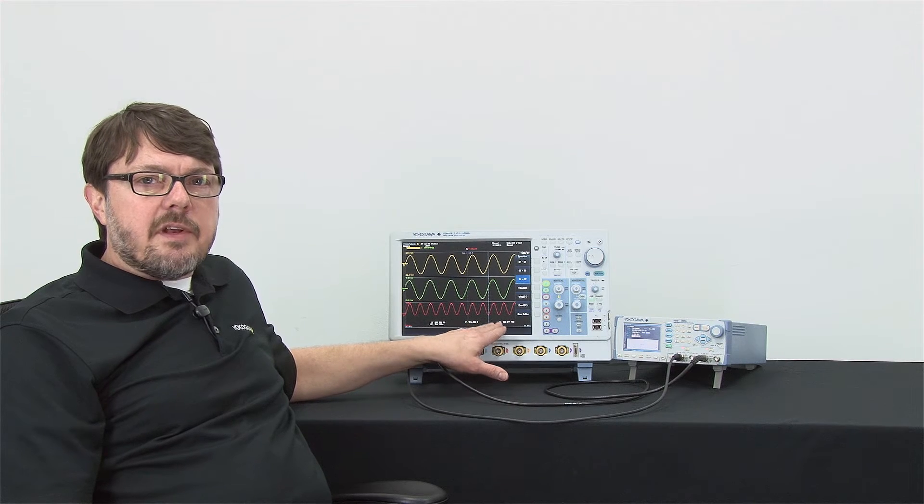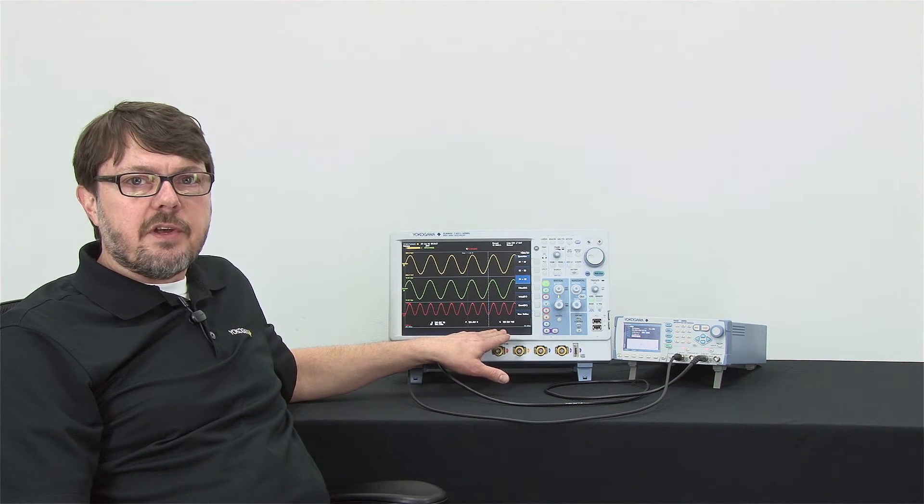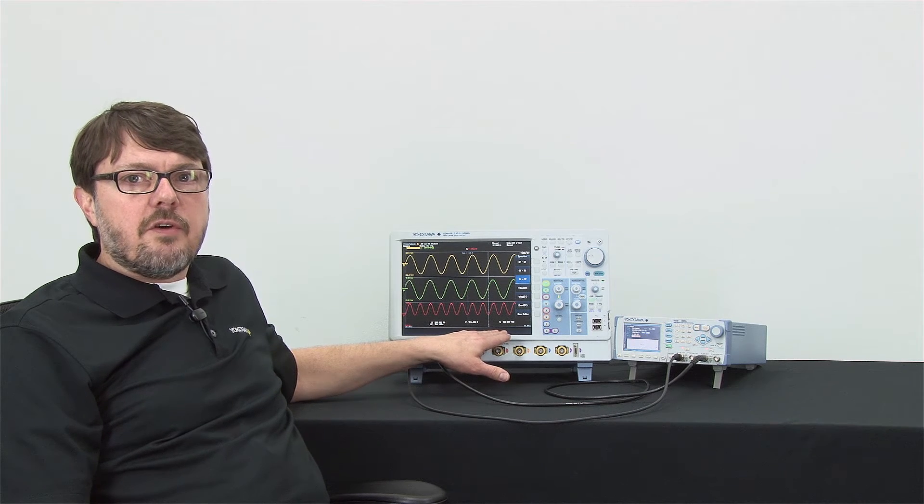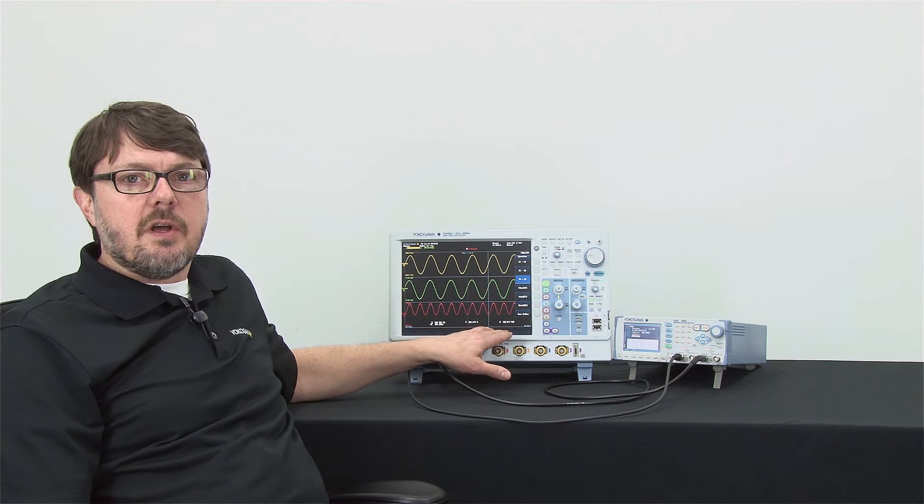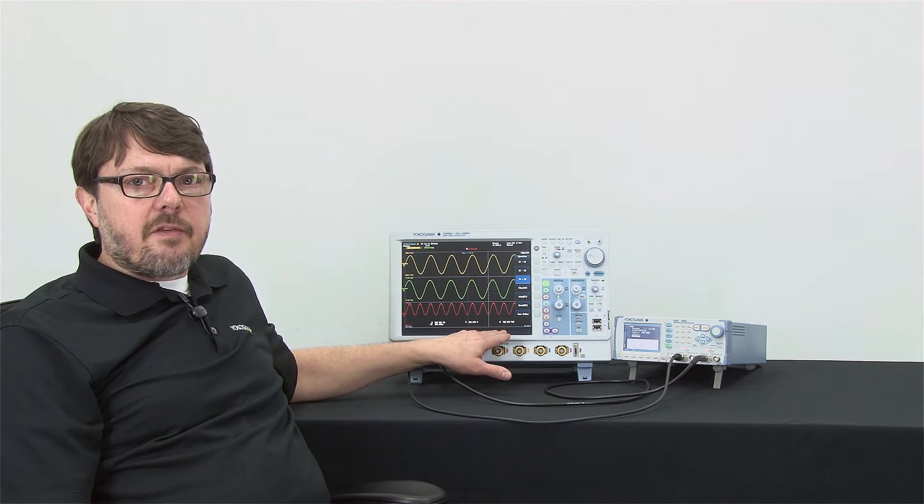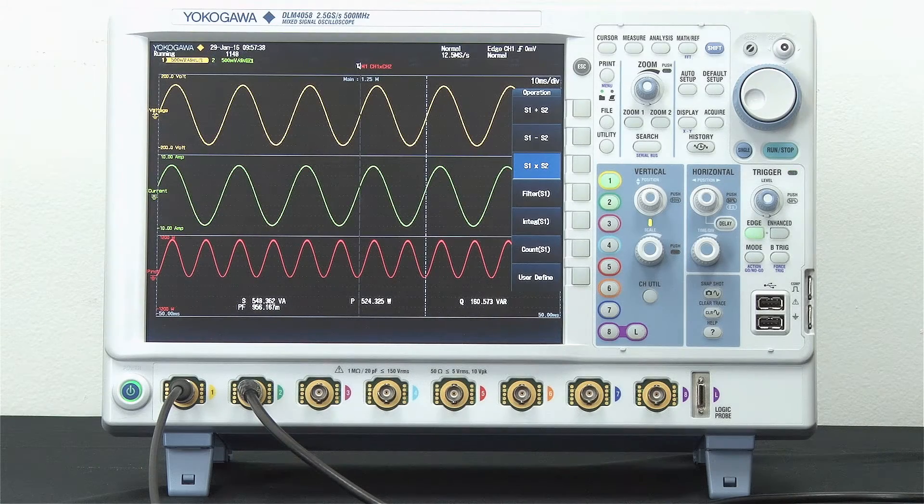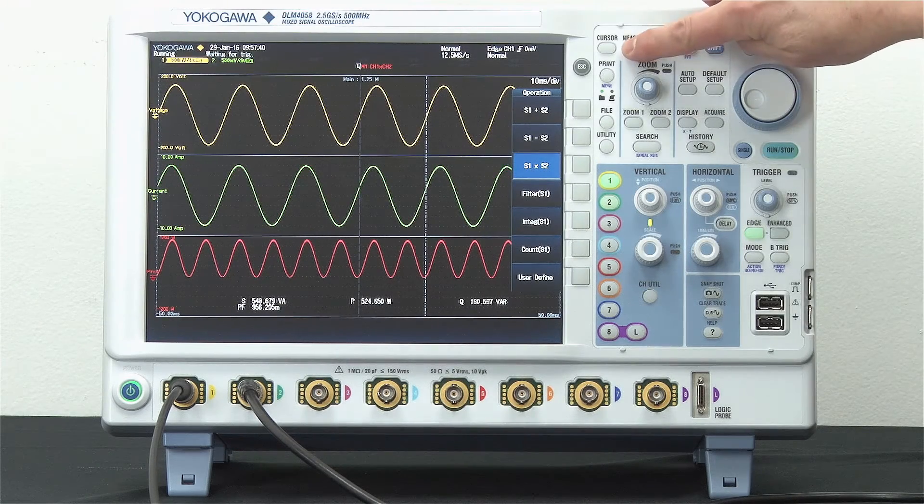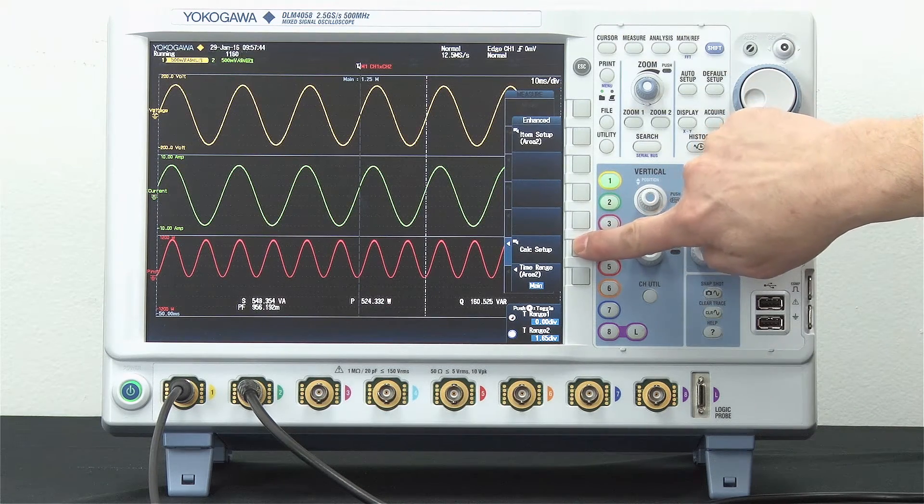Okay, now that I have an instantaneous power waveform, I want to do some calculations on it and get some numerical results for each of the four power calculation parameters which I mentioned earlier. I will use the onboard calculator for that. Again, the onboard calculator is a standard feature. To get to the onboard calculator, I go into the measure menu, then I press enhanced and then calc set up.